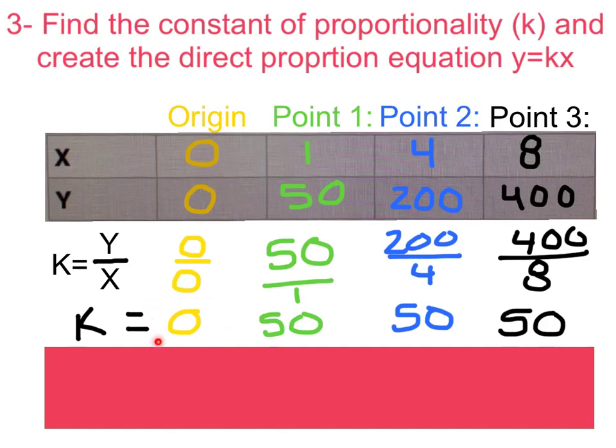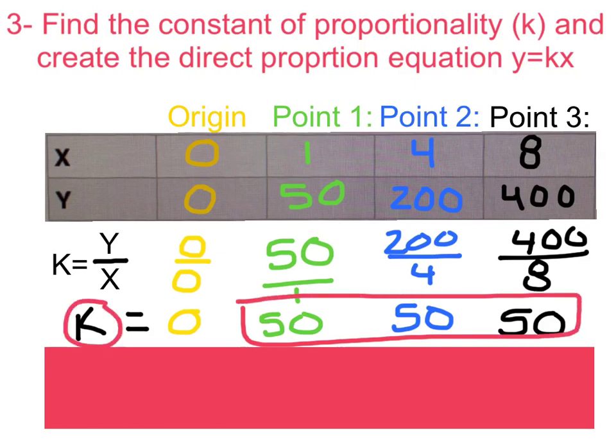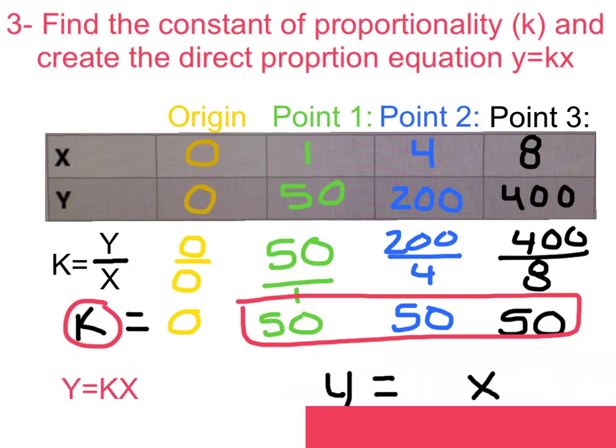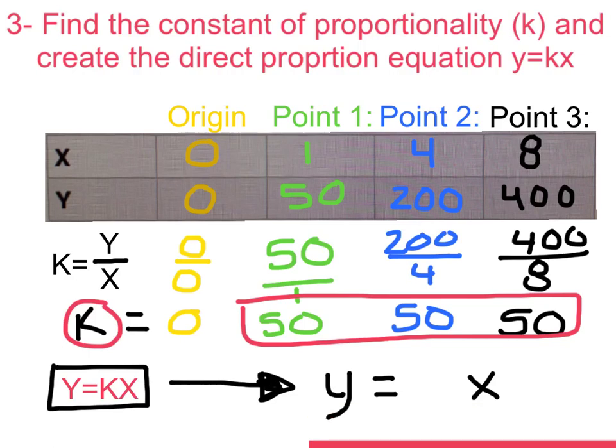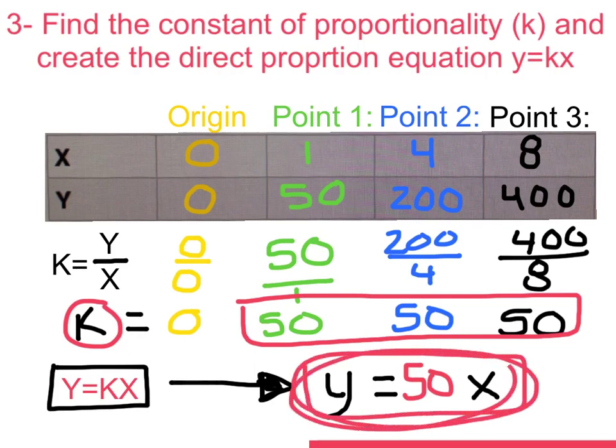So even though our origin is 0, we wanted to make sure whatever we plugged in for x, our independent, we should get y, and we want to make sure that's equal to 0. But since we noticed that the last ones here are points 1, 2, 3 are all the same, we know our constant of proportionality will be equal to 50. So this reminds us right now that our direct proportion equation is y is equal to kx. This is our handy-dandy. And now that we can put that into our equation, we know our k is equal to 50. Our final answer is y is equal to 50x. And that is our final equation for this.